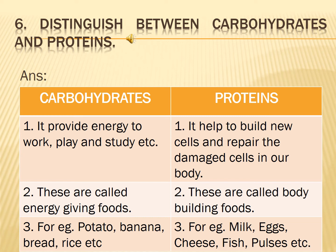Protein: First, it helps to build new cells and repair the damaged cells in our body. Second, these are called body building foods. Third, for example, milk, egg, cheese, fish, pulses etc.